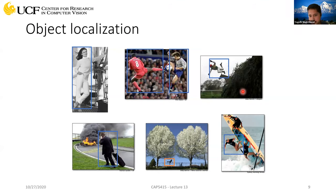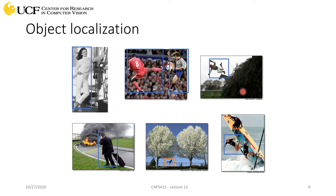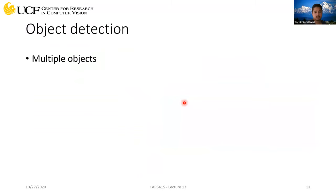If a bag is lying on a chair, you will have two bounding boxes — one for chair, one for bag — and it could happen that your bounding box for the bag is completely inside the bounding box for the chair. That's fine.